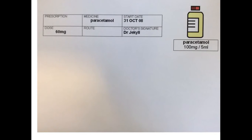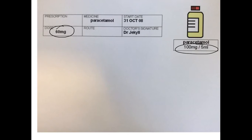Your patient has been prescribed 60mg of paracetamol. Paracetamol is available as 100mg per 5ml liquid. What does this mean? This means that in every 5ml of liquid, there is 100mg of the drug.